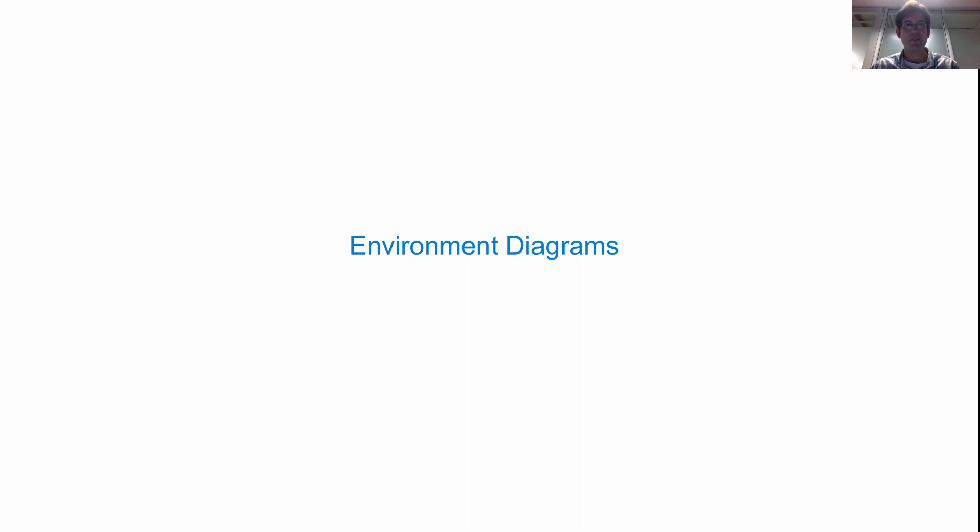Next we'll talk about environment diagrams. Environment diagrams are a way for us to keep track of what's going on within the Python interpreter when it executes a program that we typed in. Environments are real things. They're the way in which an interpreter for a programming language keeps track of what names mean. It's sort of memory that keeps track of the bindings between names and values.